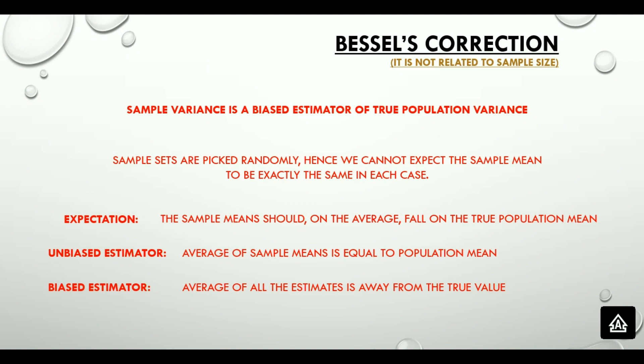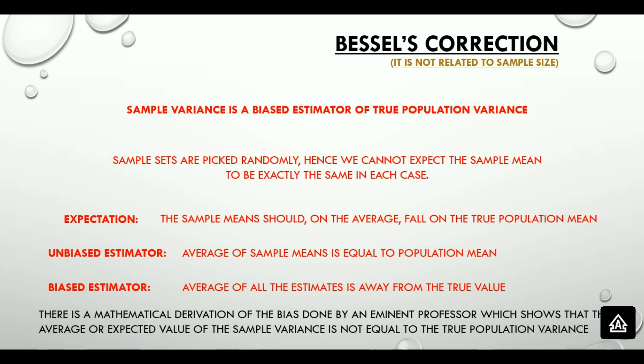And there is a mathematical derivation of the bias done by an eminent statistics professor, which shows that the average or expected value of the sample variance is not equal to the true population variance. And that is a reason why we do not prefer to use 1 divided by n, we prefer to use 1 divided by n minus 1 in standard deviation calculation.